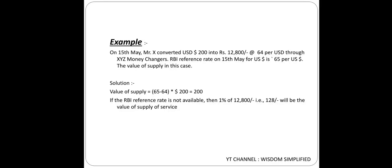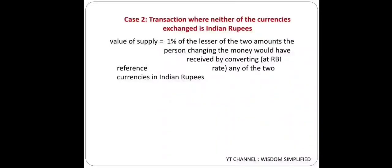That was Case 1. Now Case 2: transactions where neither of the currencies exchanged is Indian Rupees - for example, converting dollar to pound. In this case, Value of Supply is 1% of the lesser of the two amounts the person changing money would have received by converting either currency into Indian Rupees at the RBI reference rate.